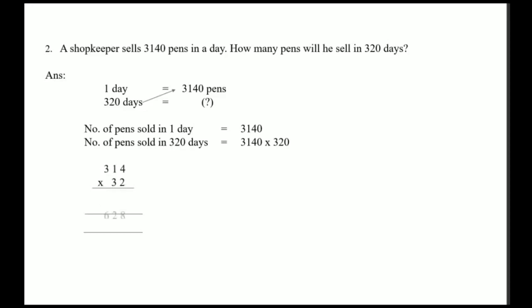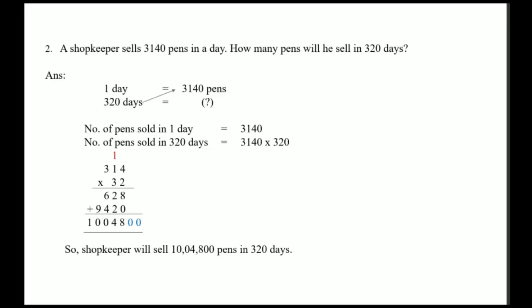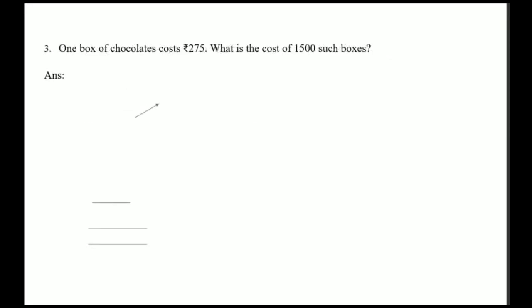I have multiplied 314 by 32 and added two zeros at the end, highlighted in blue color. So my final answer is 10 lakh 4,800. The shopkeeper will sell 10 lakh 4,800 pens in 320 days. Sum number three: a box of chocolate costs rupees 275. What is the cost of 1500 such boxes?